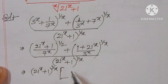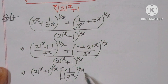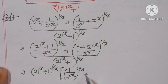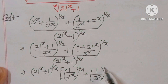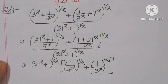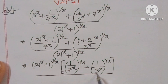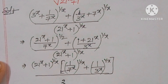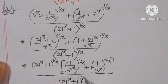After taking the common factor, what is left is: 1 by 7 power x, whole to the power of 1 by x, plus 1 by 3 power x, whole to the power of 1 by x, divided by 21 to the power of x plus 1, whole to the power of 1 by x.